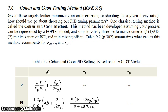In this screencast we're going to look at a couple of common tuning methods that are used to make sure that your PID controller has the kind of response that you want it to. Given these targets, either minimizing one of these error criteria or shooting for a given decay ratio, how should we go about choosing our PID parameters so that we meet our targets?